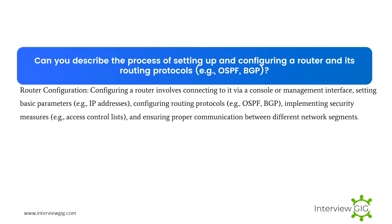Can you describe the process of setting up and configuring a router and its routing protocols, e.g. OSPF, BGP? Configuring a router involves connecting to it via a console or management interface, setting basic parameters such as IP addresses, configuring routing protocols such as OSPF and BGP, implementing security measures such as access control lists, and ensuring proper communication between different network segments.